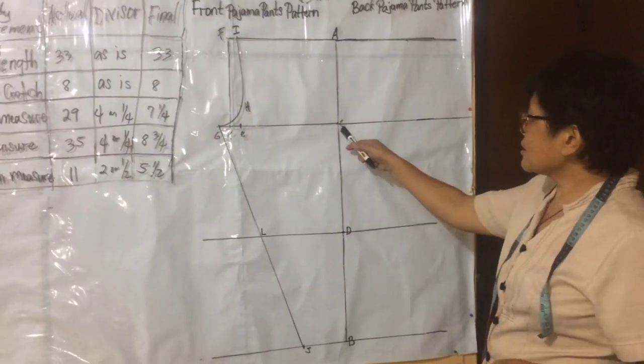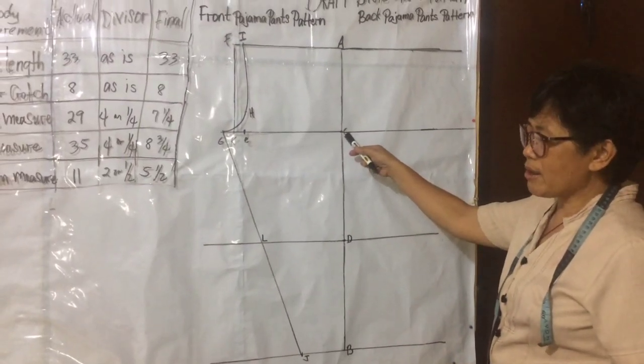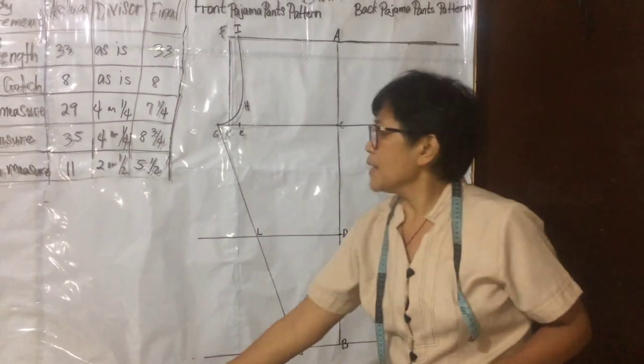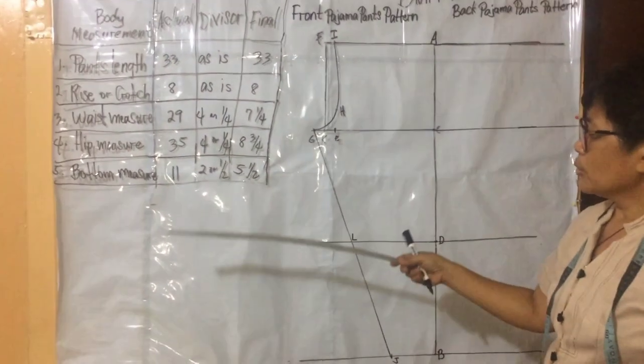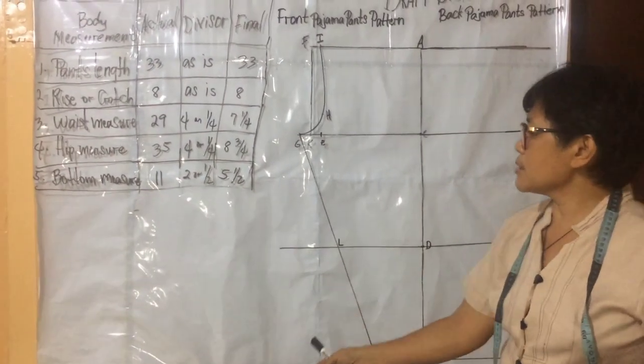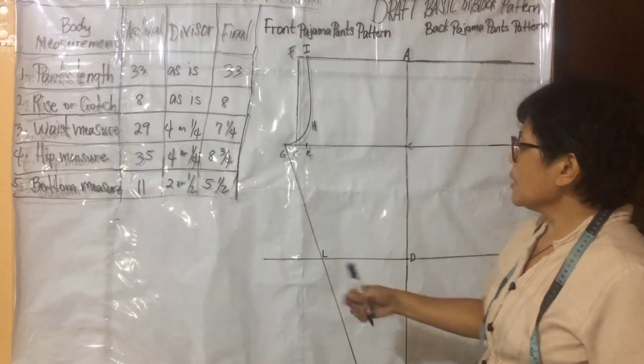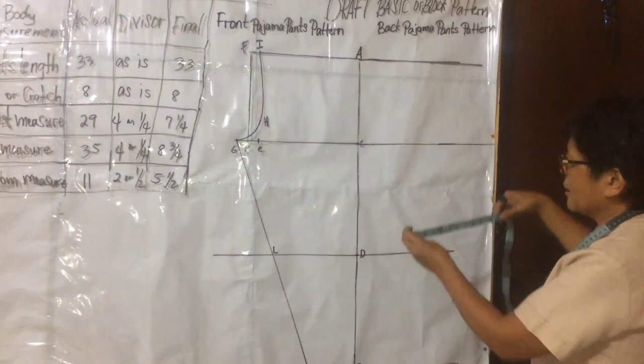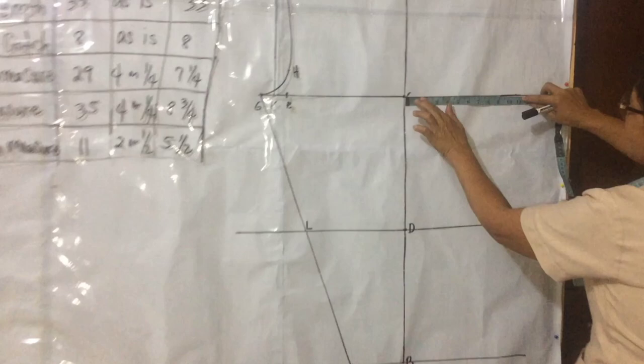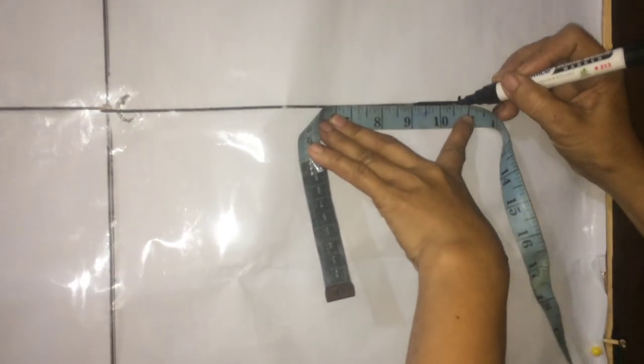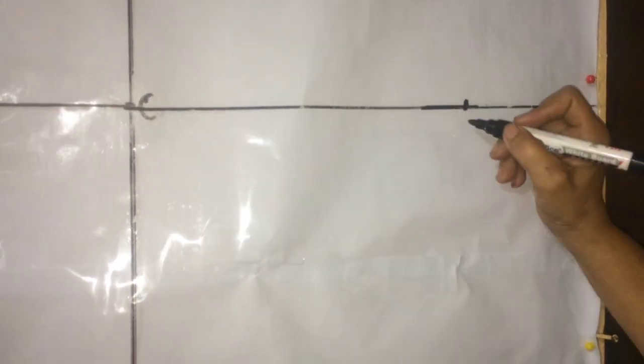From point C, measure to the right, one fourth final hip measure plus one or two inches. Eight and three fourths plus two, ten and three fourths. From point C, measure ten and three fourths. Mark M.